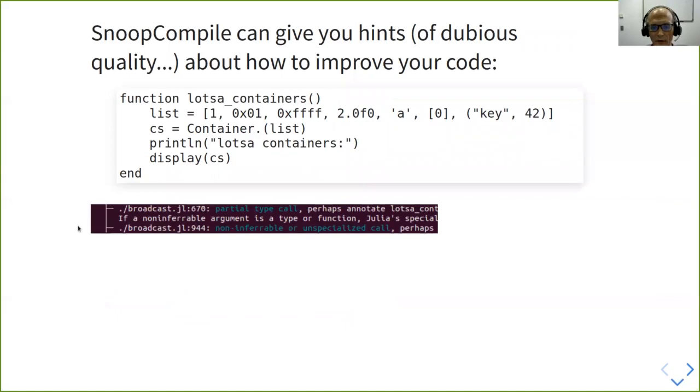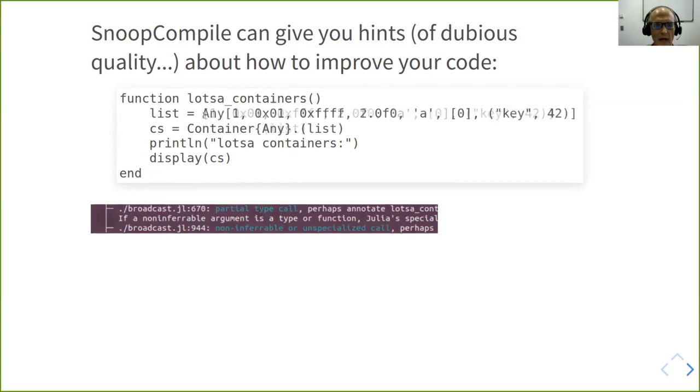The final thing that the tools can do is sometimes actually hint about how you go about fixing something. I should say that these hints are of somewhat dubious quality, but they are nevertheless useful. Here's an example produced by this package SnoopCompile where here we've inferred this method. You can ask it to suggest particular ways to intervene into this code. Some of these diagnostics are somewhat inscrutable maybe initially but eventually you get to a point where you can look at something like this and maybe see that you should add some type information here. You can see that one can make this method a lot happier just by adding a couple of specific type information.